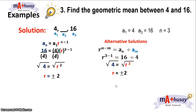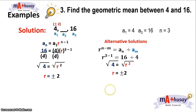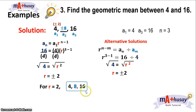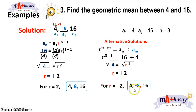We have the common ratio: positive or negative 2. To get the geometric mean, we multiply positive or negative 2 to the first term, giving positive or negative 8. So for r equals 2, the geometric mean is positive 8 and the sequence is 4, 8, 16. For r equals negative 2, the sequence is 4, negative 8, 16.